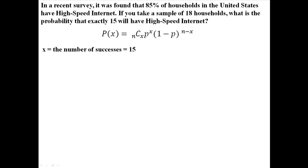So we know that in this case, X is the number of successes. We are looking for the probability of 15 successes. N is the number of trials. We know that there are 18 trials, because there are 18 households. P is the probability of success. We know that there is an 85% chance that there will be a success. So now that we know X and N and P, we can put those things into this formula.